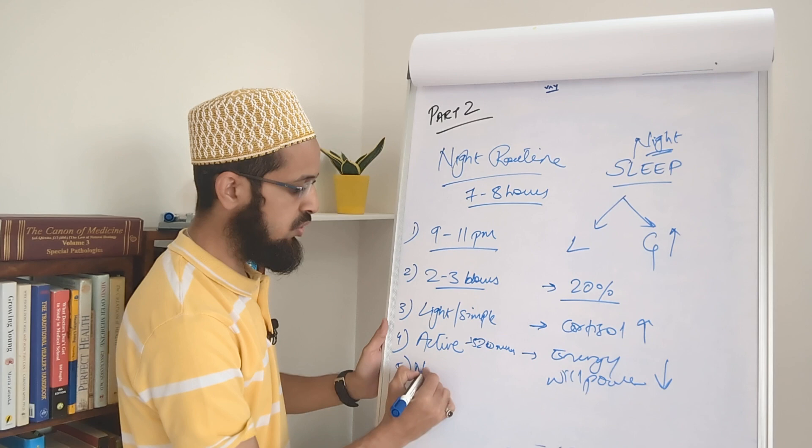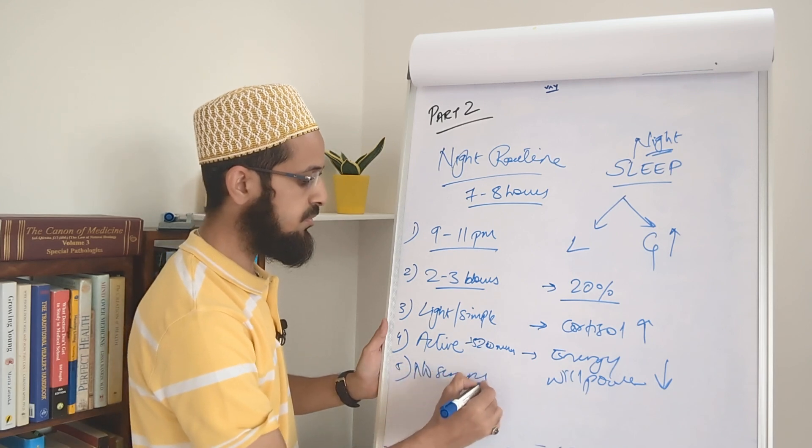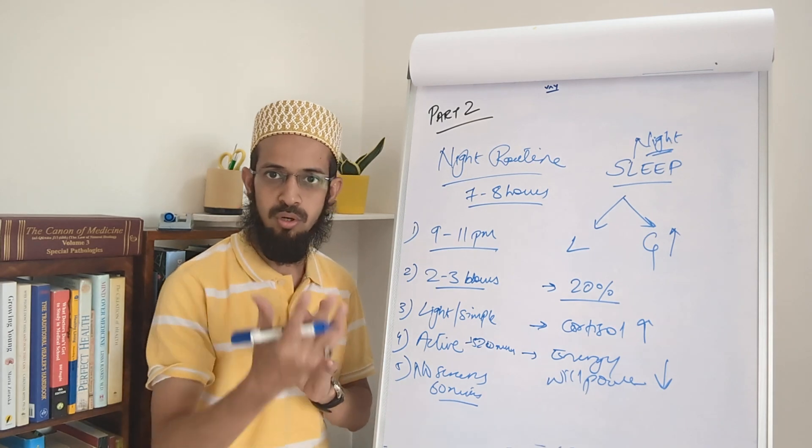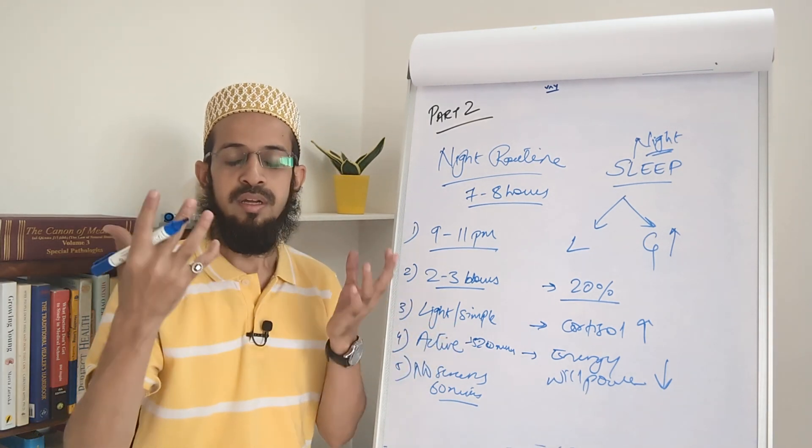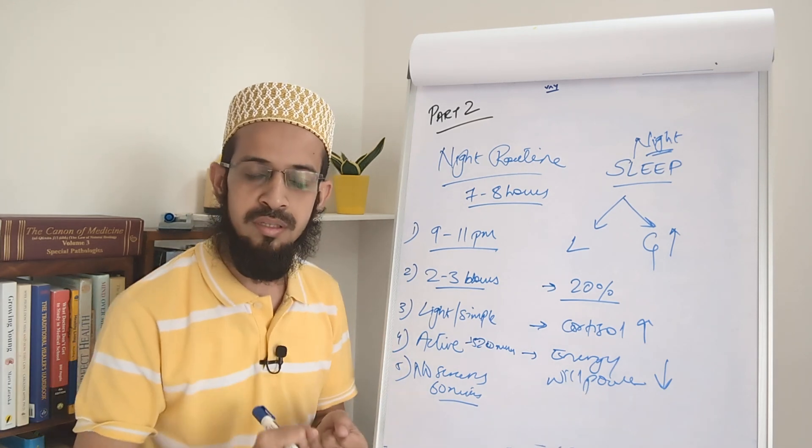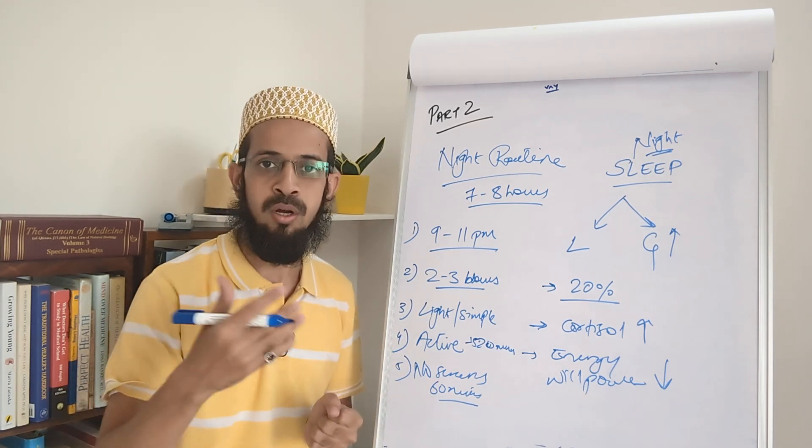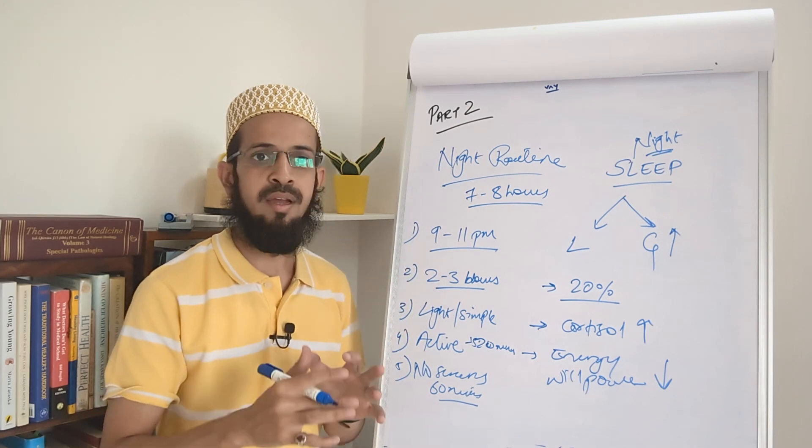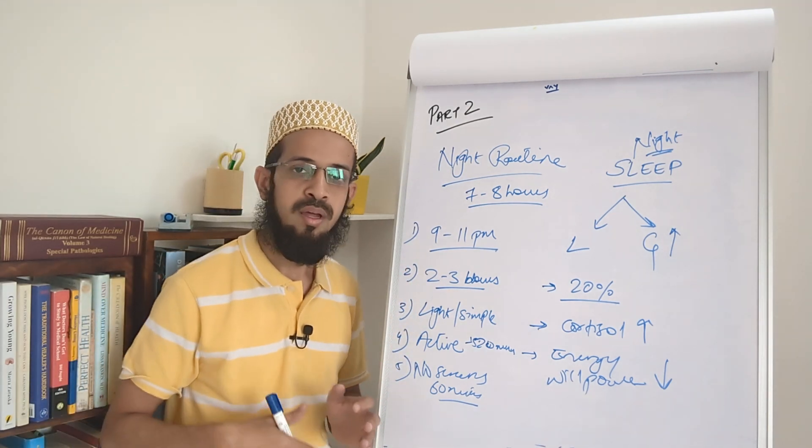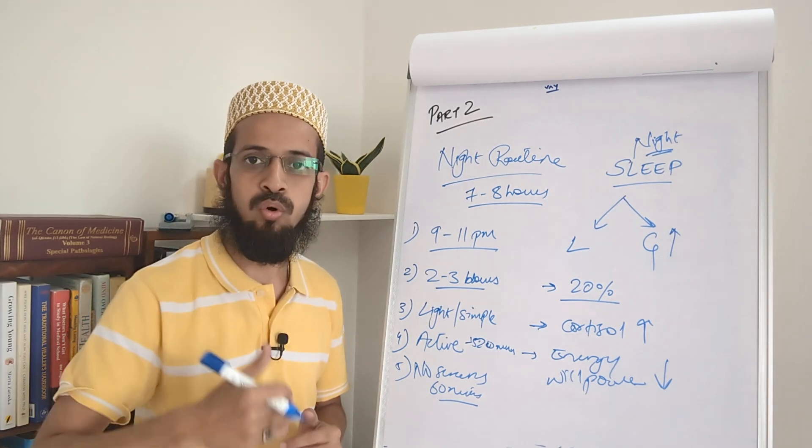And the last one is no screens 60 minutes before your sleep. So if you are exposing your eyes to extreme blue light, extreme white light, LED lights, then you are compromising the release of sleep hormone which is melatonin. So you have to dim lights and you have to get away from your gadgets at least 30 to 60 minutes before and then plan to go to sleep.